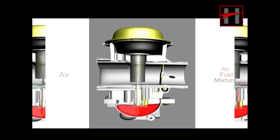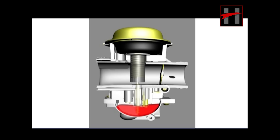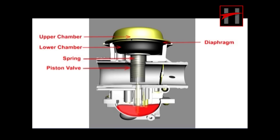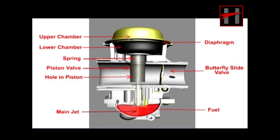The main circuit provides the air-fuel mixture at medium and fast speed. The main circuit consists of the following parts: diaphragm, lower chamber, upper chamber, spring, piston valve, butterfly slide, fuel main jet, hole in the piston, and the jet needle.